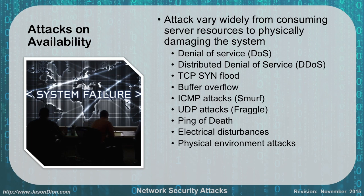Electrical disturbances are another availability attack — all servers run on electricity. Cutting power to an area creates an availability issue. Physical environment attacks also apply: computers need heating and cooling, so attacking the HVAC system can cause servers to overheat and shut down or destroy themselves. Attacking the physical needs of machines is another way to disrupt availability.